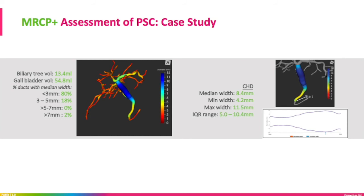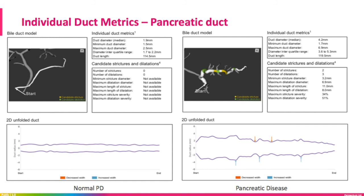This is a case study assessing a patient with PSC — an example of a severely dilated common bile duct with no apparent strictures. We can very readily identify and quantify not only the width but also the length of the significant dilatation on the common biliary duct. The duct is dilated and is also shown in the unfolded 2D graph that is included in the report. This slide compares two pancreatic ducts — one normal on the left and another diseased on the right. On the right is a patient with pancreatic disease, and MRCP+ shows a very heterogeneous pattern with dilatations and narrowing along the length of the duct.